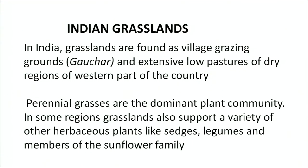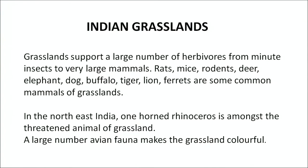The other important ecosystem of India is grasslands. In India, grasslands are found as village grazing grounds called gauchar and extensive low pastures of dry regions in the western parts of the country. The perennial grasses are the dominant plant community. In some regions the grasslands also support a variety of herbaceous plants like sages, legumes and members of the sunflower family. Grasslands support a large number of herbivore fauna from minute insects to large mammals such as rat, mice, rodents, deer, elephant, dog, buffalo, tiger, lion and ferret.